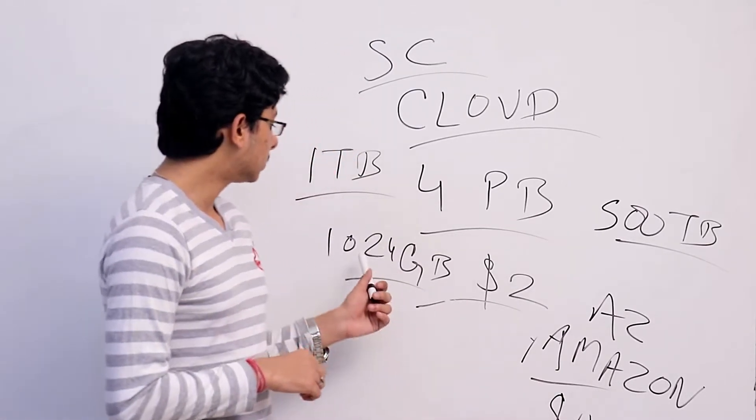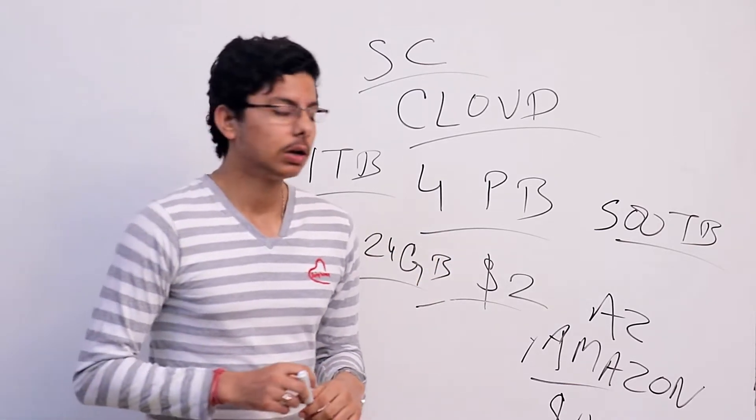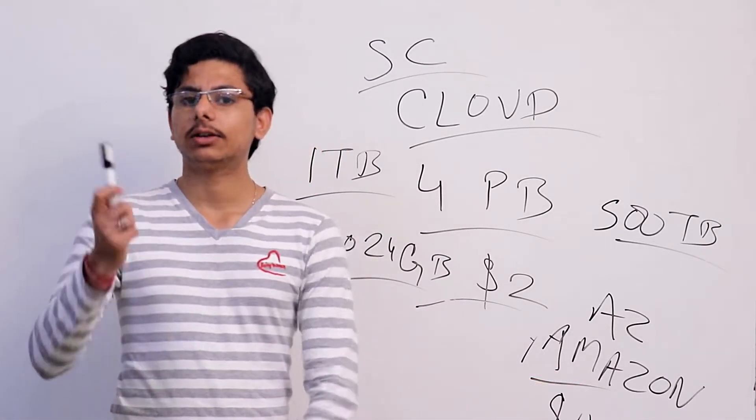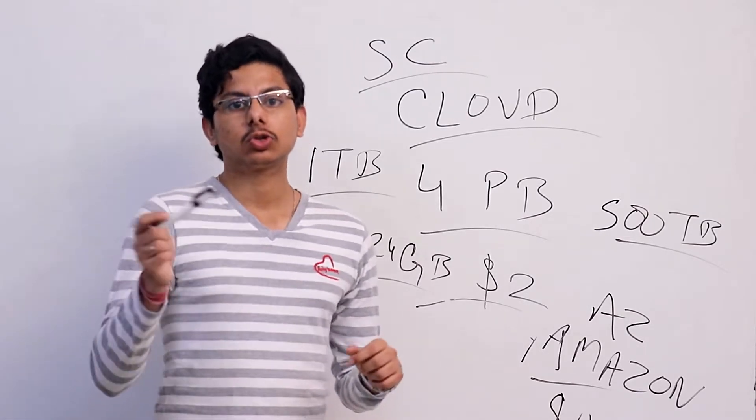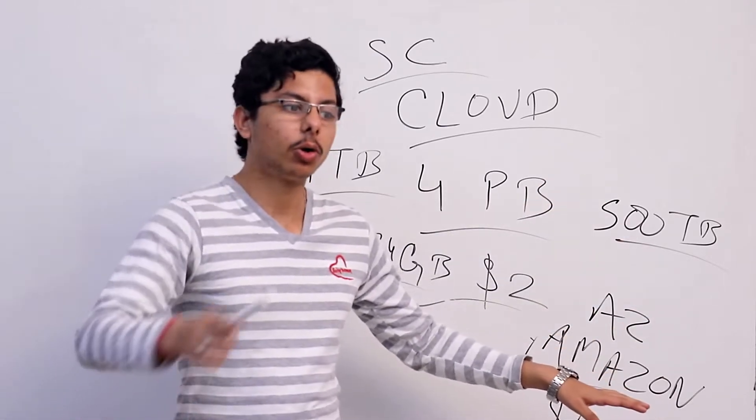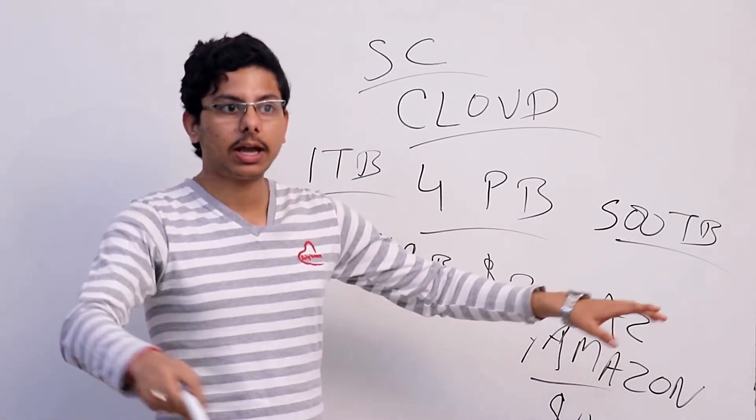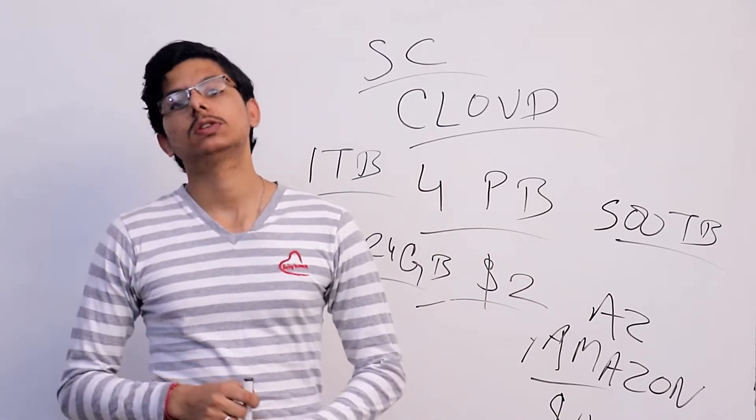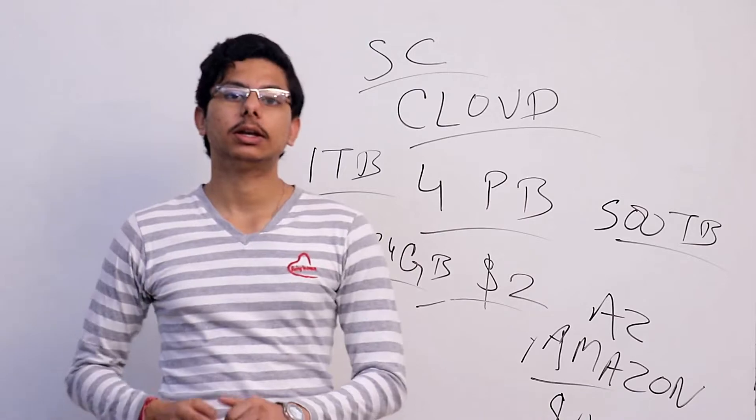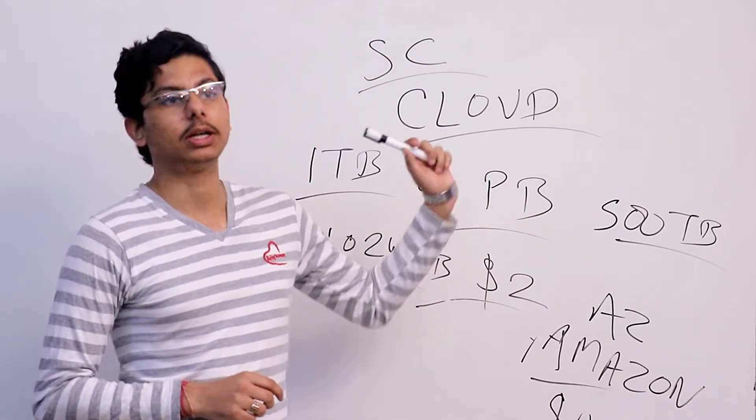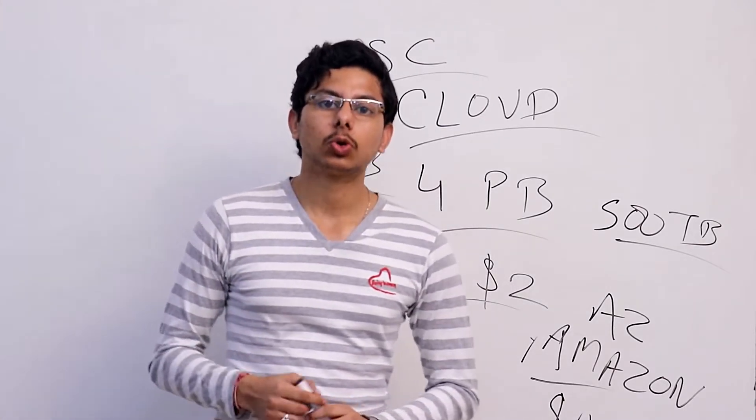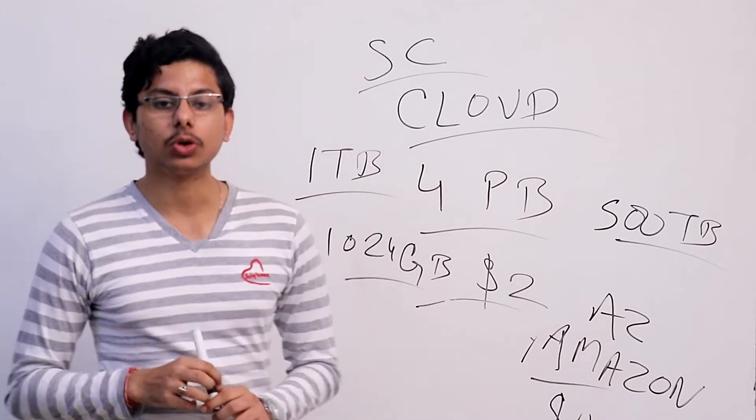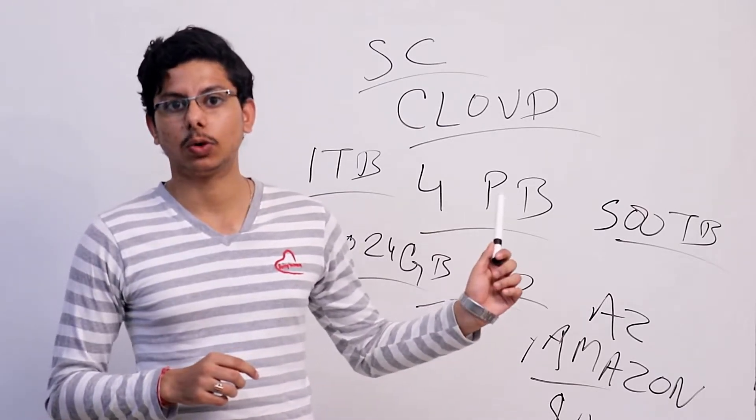The second thing is its huge storage—4 petabytes. The third thing is decentralization. In Amazon or any other storage company, they're stored in a specific location. But Sia Coin is decentralized because your data will be stored in different locations across the globe. The probability that your data is lost is very less because of redundancy—your data is stored in multiple disks.